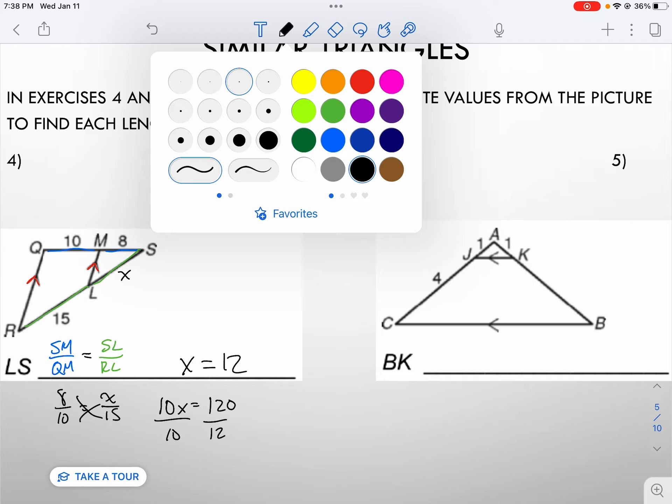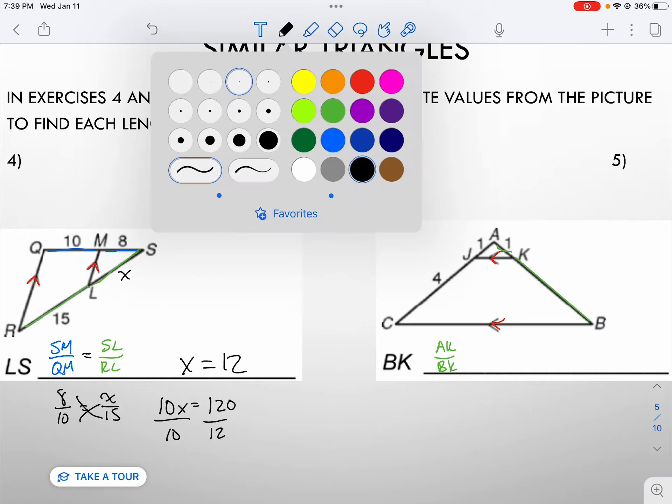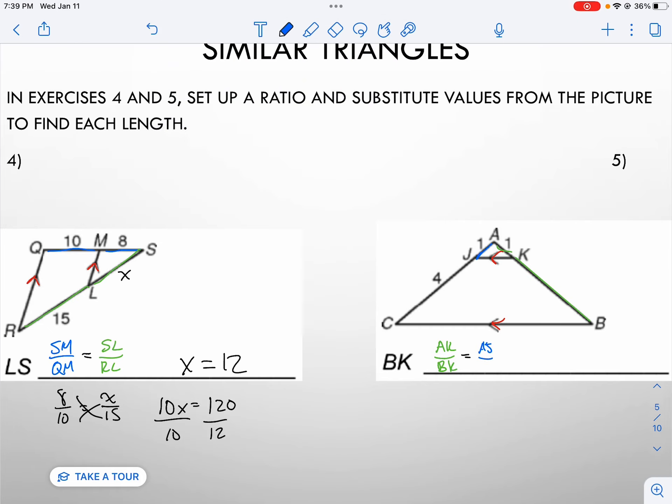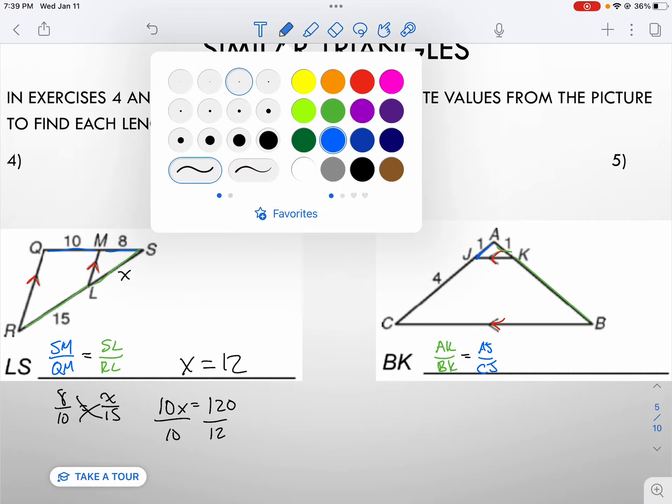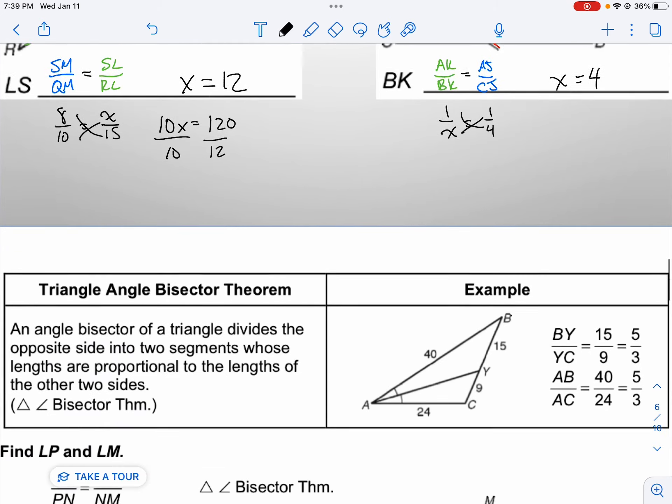Then we need to solve for BK. I see parallel lines. Therefore, I should have my ratio: AK over BK should be proportional to AJ over CJ. Substitute in your values: AK is 1 over BK we don't know, call it X, equals 1 over 4. Therefore, we cross multiply and see that X should equal 4.